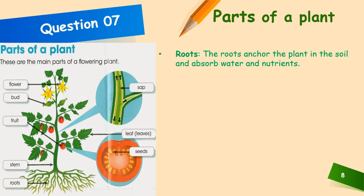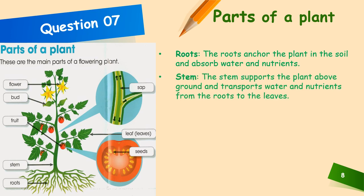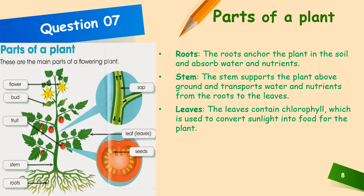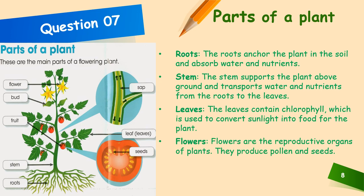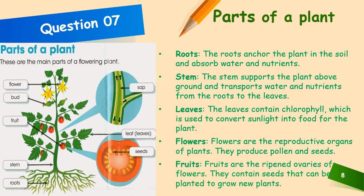The roots anchor the plant in the soil and absorb water and nutrients. The stem supports the plant above the ground and transports water and nutrients from the roots to the leaves. The leaves contain chlorophyll, which is used to convert sunlight into food for the plant. Flowers are the reproductive organs of the plant and they produce pollen and seeds. Fruits are the ripened ovaries of flowers and can contain seeds that might be planted to grow new plants.